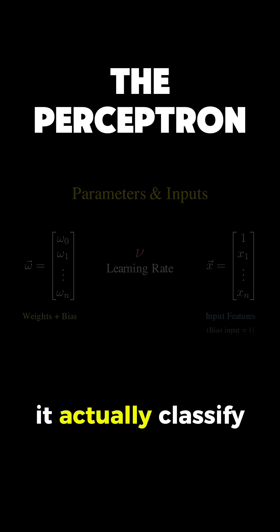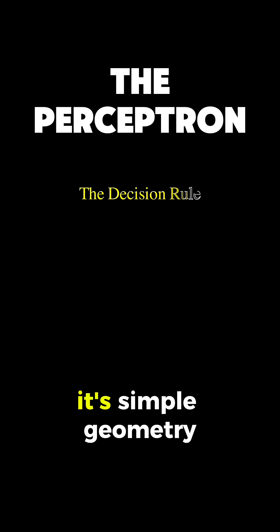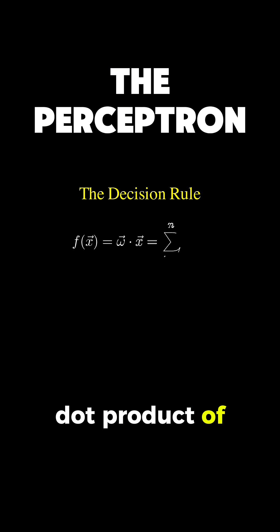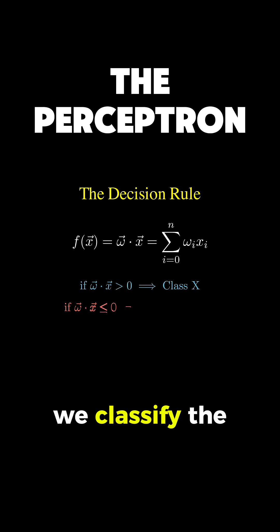So how does it actually classify a point? It's simple geometry. We take the dot product of our weight vector and our input vector. If the result is greater than zero, we classify the point as an x. If it's less than or equal to zero, it's a triangle.